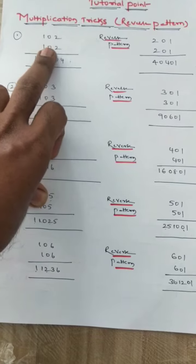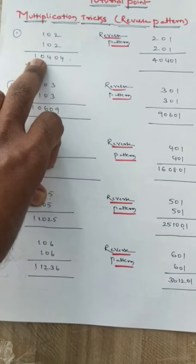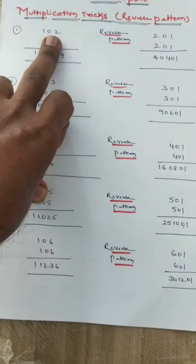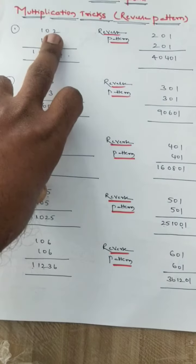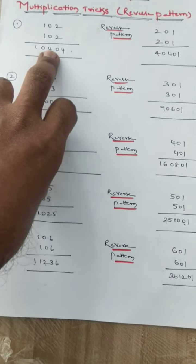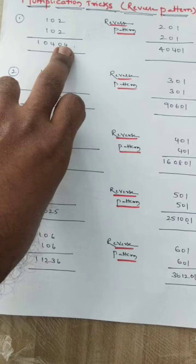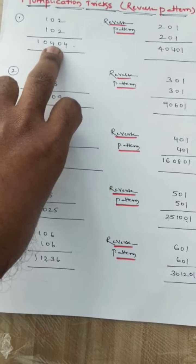102 into 102, what we get the result? This one zero you have to write as it is. This unit space you have to take the sum and take the product again. I have clearly explained in the previous video.